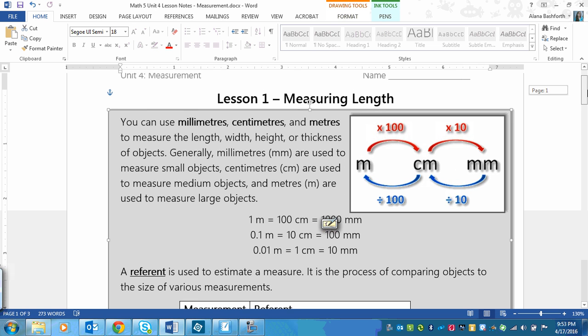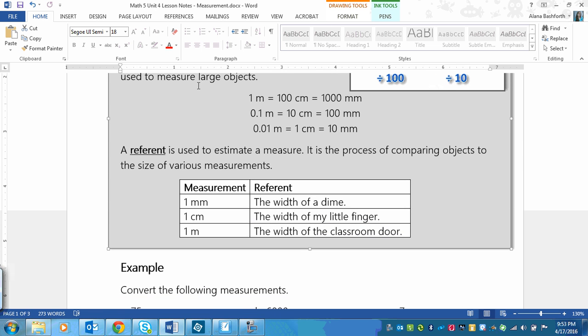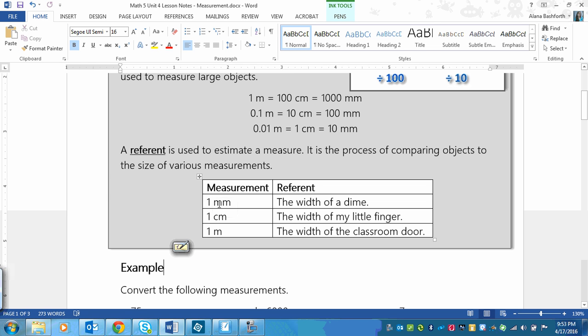Okay, now that's one thing that you need to know. Now the second is what a referent is, and a referent is used to estimate a measure, so it is the process of comparing objects to the size of various measurements. And here are some examples. Please use your own if you are asked to find reference in the assignment. So for example, one millimeter, a referent for that is the width of a dime, so that means that a width of a dime is about one millimeter. A referent for one centimeter is the width of my little finger, and a referent for one meter is the width of the classroom door, so these things are about the size of these things.